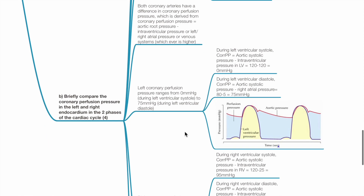The right endocardium is exposed to a systolic and diastolic pressure of around 25 and 5 mmHg respectively. The left endocardium is exposed to a systolic and diastolic pressure of around 120 and 5 mmHg respectively. For the left coronary perfusion pressure, it ranges from 0 to 75 mmHg. During ventricular systole, coronary perfusion pressure equals 120 minus 120, which equals 0 mmHg. During left ventricular diastole, coronary perfusion pressure equals 80 minus 5, which equals 75 mmHg.